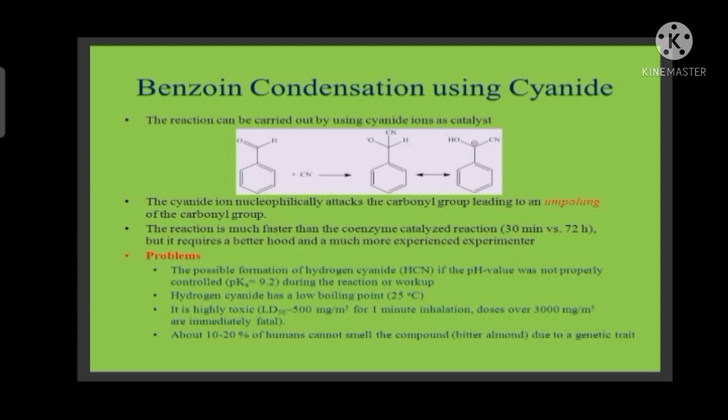The problems are: possible formation of hydrogen cyanide if the pH value was not properly controlled during the reaction or workup. If the pH value was not properly maintained or controlled, then HCN will form, and that is harmful to our health. This is a biggest disadvantage. Hydrogen cyanide has a low boiling point of 25 degrees Celsius, which is normally our room temperature, so it may be evaporated. It is highly toxic. About 10 to 20 percent of humans cannot smell the compound due to genetic trait.